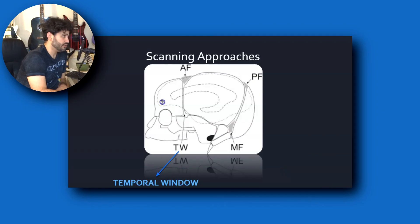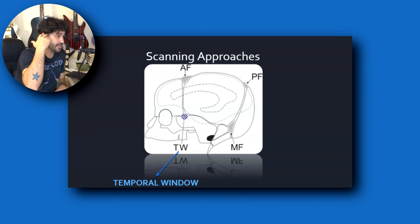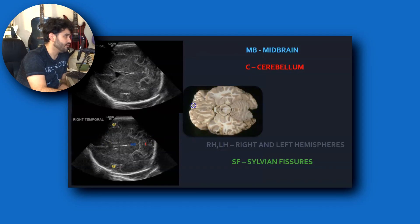The temporal window is located anterior to the ear. In babies, scanning through there is easy. You get a transverse brain view showing the lateral ventricles, septum pellucidum, and third ventricle, with a little bit of the cerebellum. If there's any large hemorrhage or midline shift, you'd see it there.